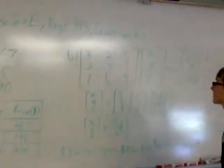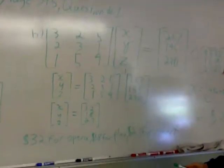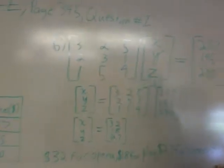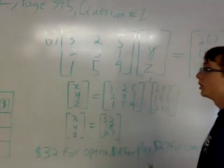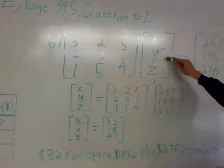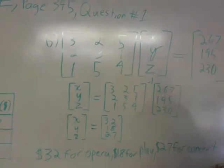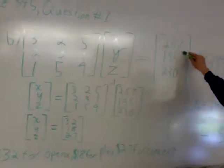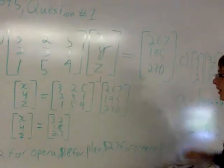Now for Part B, in order to find the ticket price in matrix format, you bring the variables, the numbers over here. Put the X, Y, and Z variable here in matrix format. And you put the total prices in matrix format over here.